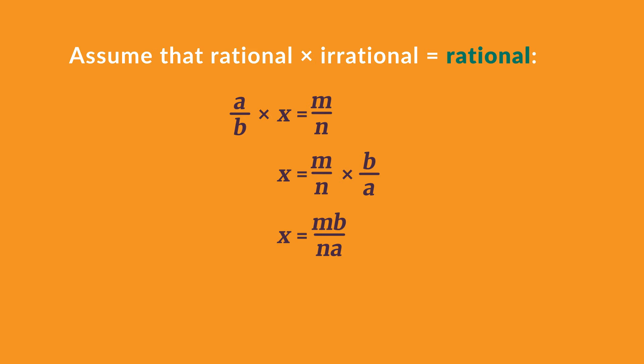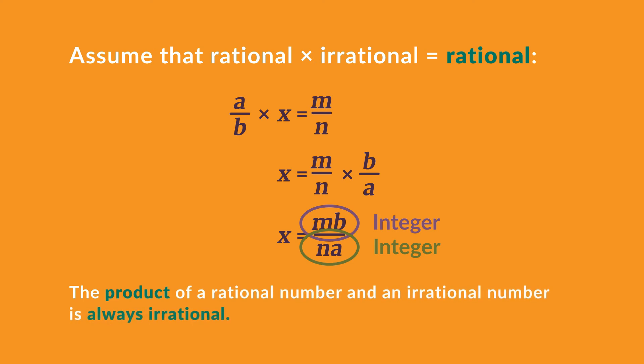But we have now formed a fraction that has an expression that will be an integer in the numerator and an expression that will be an integer in the denominator. This means that x cannot be an irrational number after all, and we've contradicted our original assumptions. So we can conclude that the product of a rational number and an irrational number is always irrational.